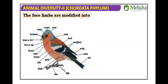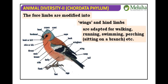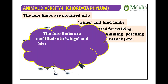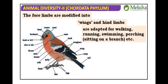Birds are tetrapods, like amphibia, reptilia, aves, and mammals. However, the forelimbs are modified into wings, and the hind limbs are adapted for walking, running, swimming, and perching — sitting on a branch. So forelimbs became wings and hindlimbs serve various locomotory functions.